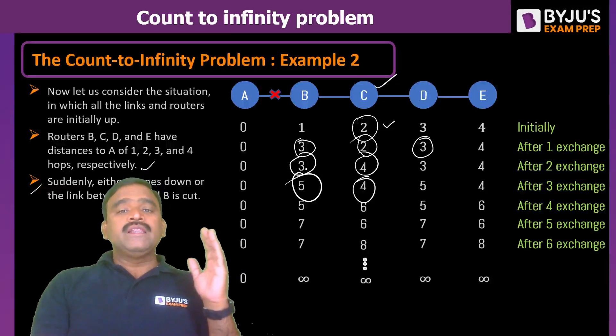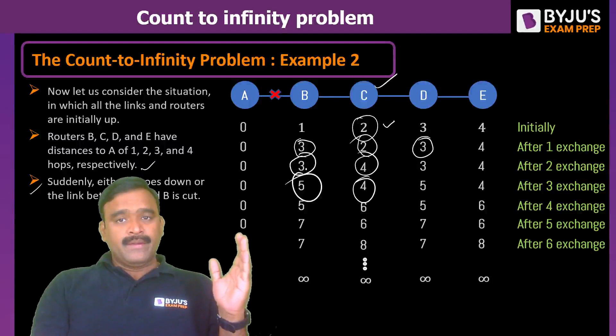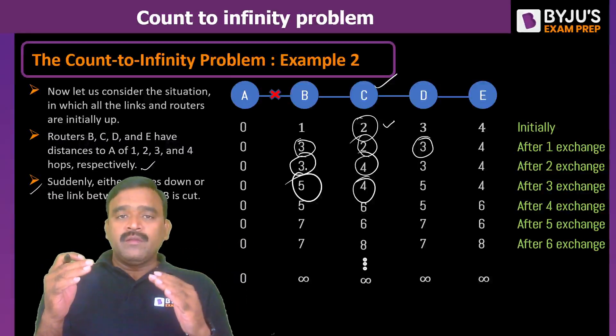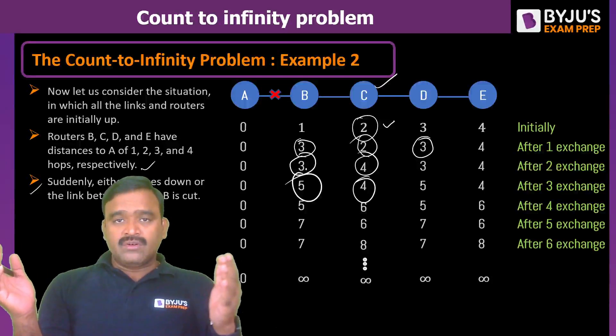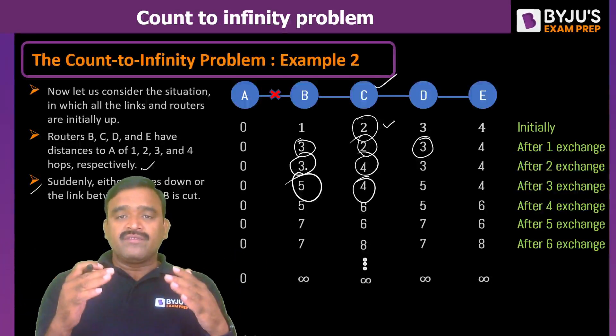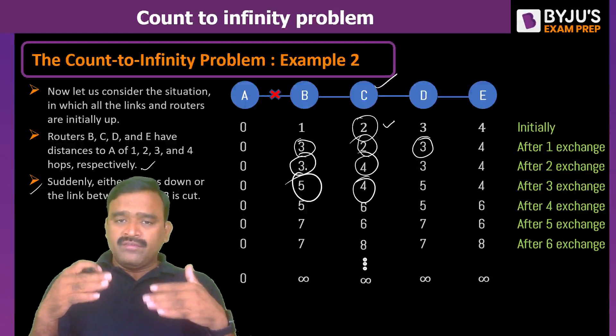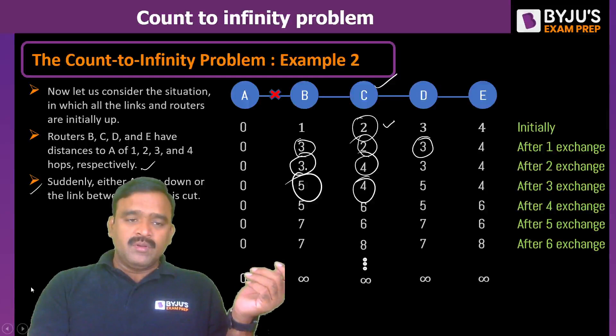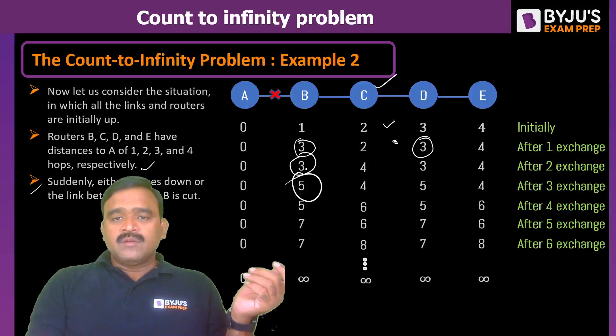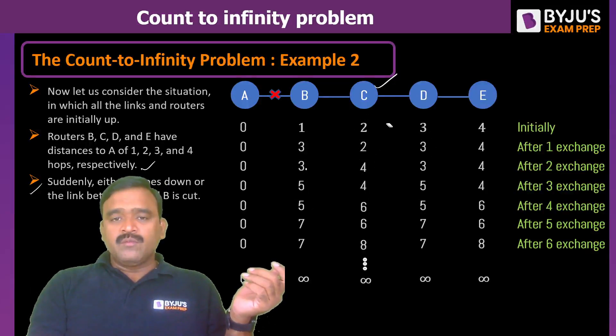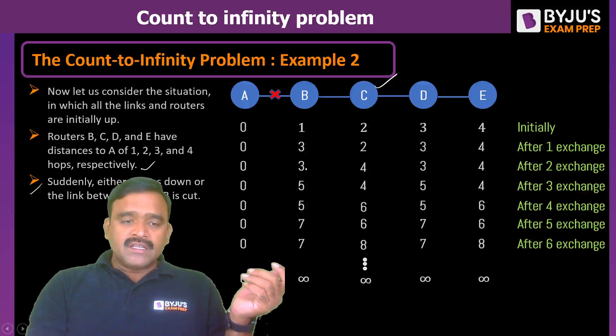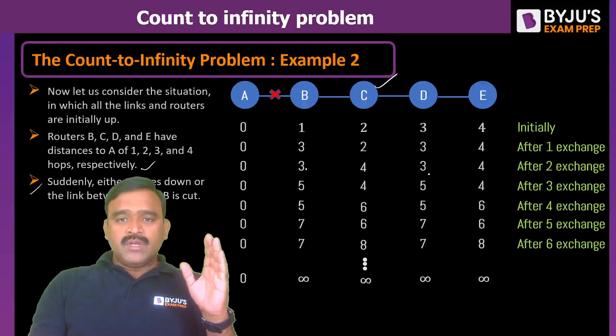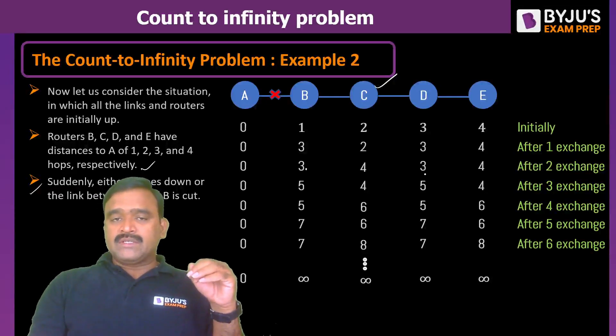This is a problem faced only in the distance vector routing. In distance vector routing, initially every node will keep an infinity as entry to the distance to other nodes. And after exchanging information, it will update. After all the infinities are being removed, that means the routing tables will get stabilized. What do you mean by stabilized routing table? Stabilized routing table means the routing table is containing a shortest distance from any node to all other nodes. That is called a stabilized routing table. Hope you understood.